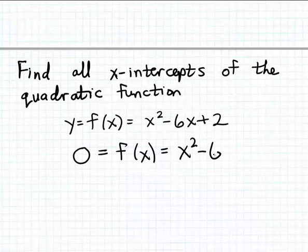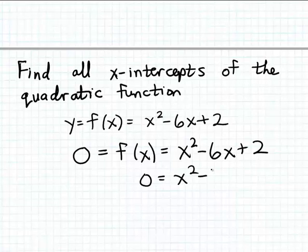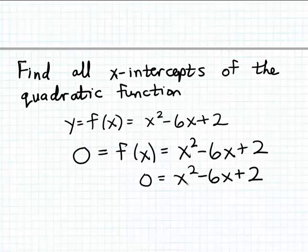That gives us the equation: 0 = x² - 6x + 2. Removing the function notation, we just get the equation we want to solve. Since the function is a quadratic function, the resulting equation is a quadratic equation — we have the unknown squared, which is characteristic of quadratic equations.